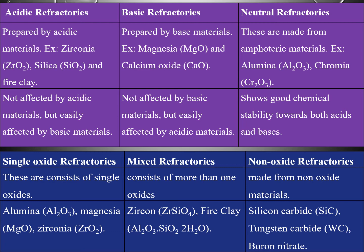Basic refractories are made from basic materials like magnesium oxide and calcium oxide. Basic reactions can be conducted in these, but acidic reactions are not allowed as they are easily affected by acidic materials. Neutral refractories are made from amphoteric materials like alumina and chromite, and both acidic and basic reactions can be performed within neutral refractories.